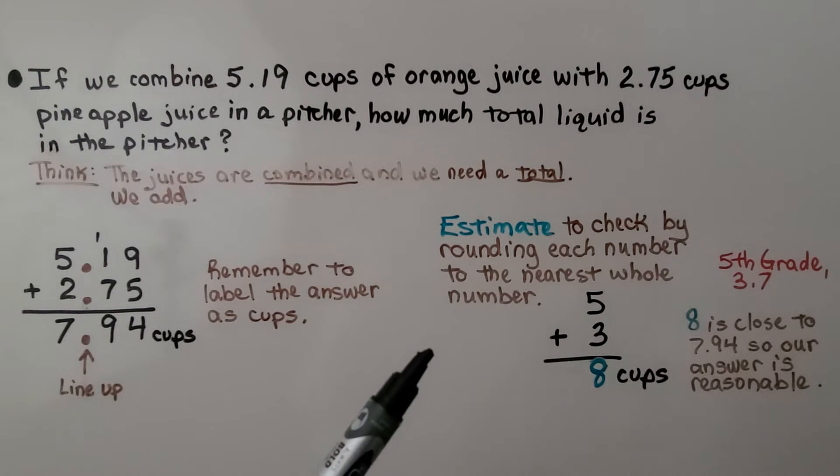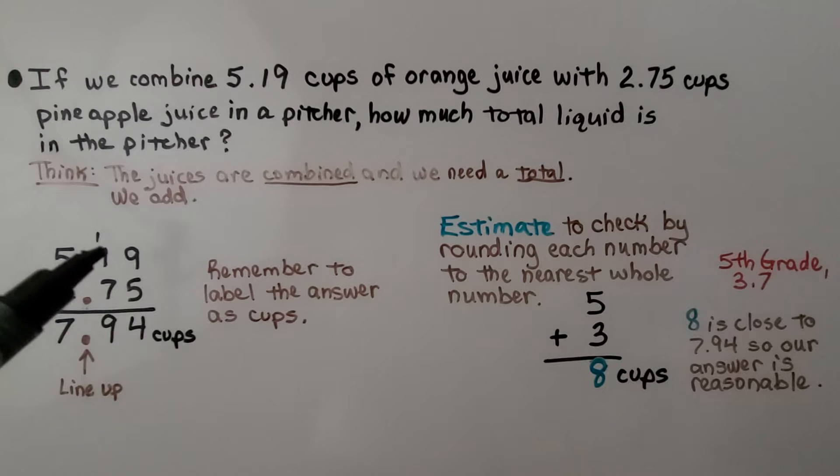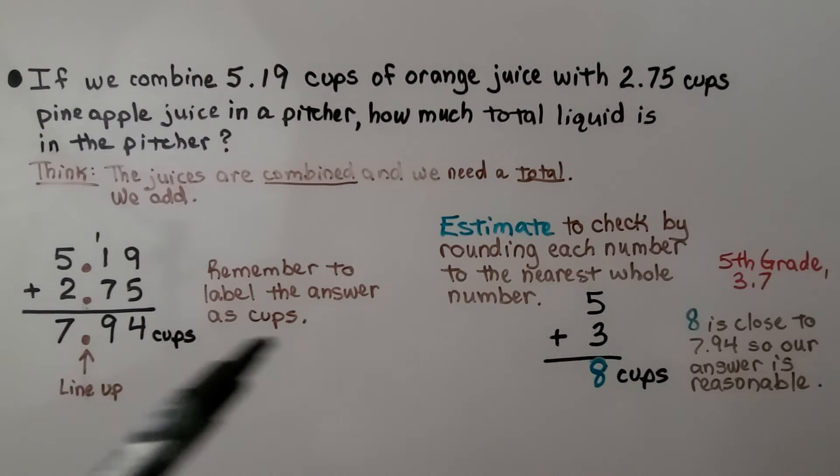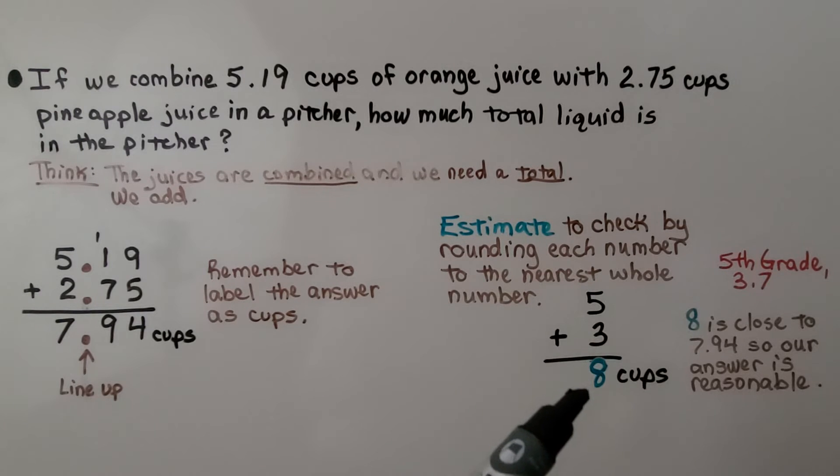And we can estimate to check by rounding each number to the nearest whole number. We could even round it to the nearest tenth. 5 and 19 hundredths can be round to 5. 2 and 75 hundredths, that can be round to 3. That's 8 cups.